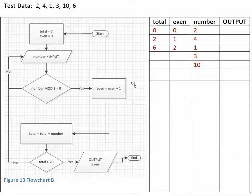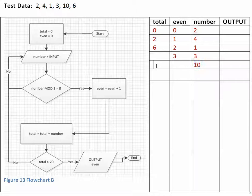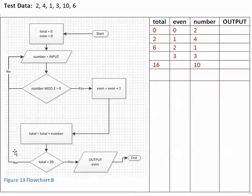We come out and even is incremented again. We move down and total is assigned the value of total plus number. Total is currently 6 and number is currently 10, so total is now 16. We ask: is total greater than 20? No, it's not.